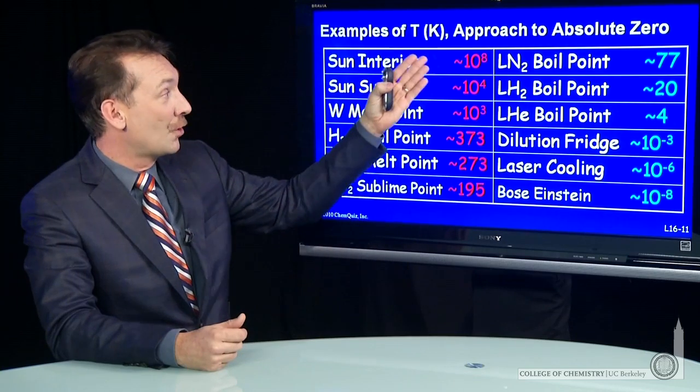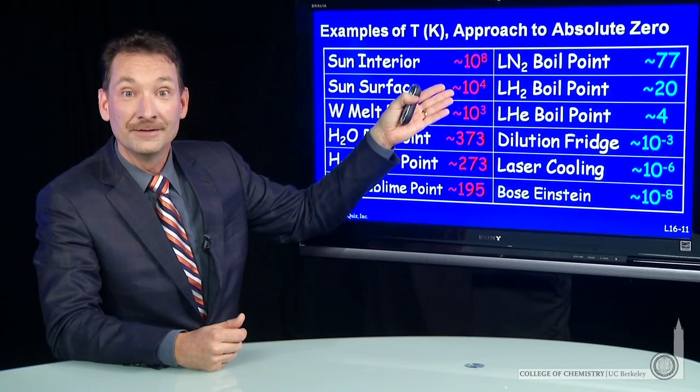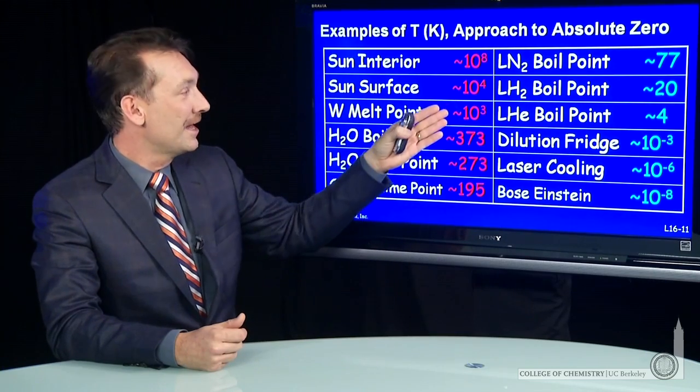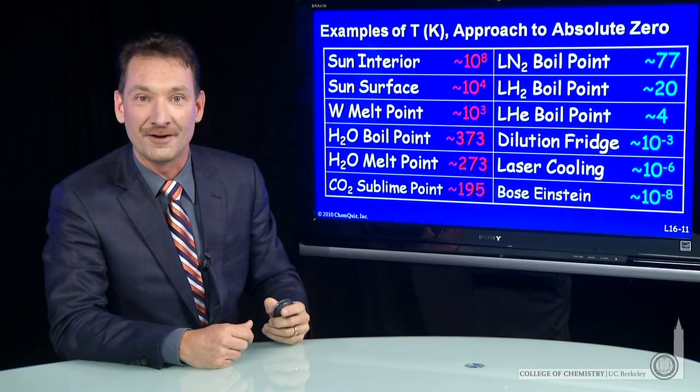As we go down in temperature, we can go past the surface of the sun, tens of thousands of degrees. The melting point of tungsten, about 1,000 degrees Kelvin.